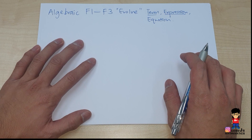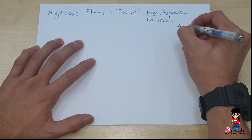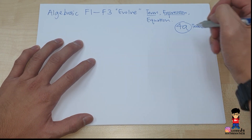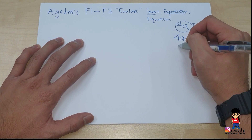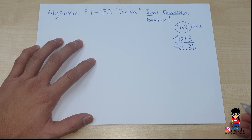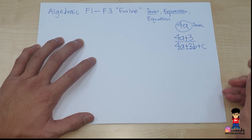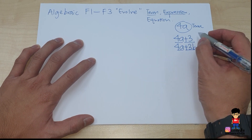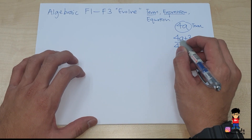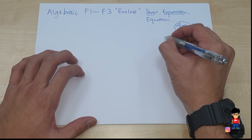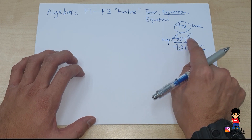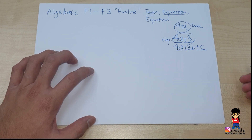If I give you 4a, this thing is named an algebraic term. If I come into 4a plus 3, or 4a plus 3b, you can see there are two terms. If you add another plus c, you get three terms. So when you have more than one term, we name it an expression — that's the expression word. Two terms, three terms, that's one expression.